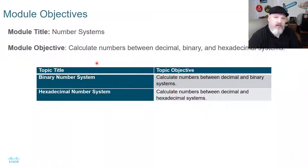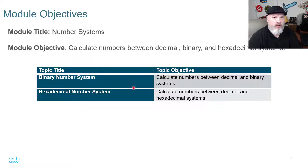Welcome to the Cisco Netacad Introduction to Networks video series by Jason Johnson. This video is module 5: number systems. The objectives in this module will be the binary number system and the hexadecimal number system. I want to point you to the description below in this video.